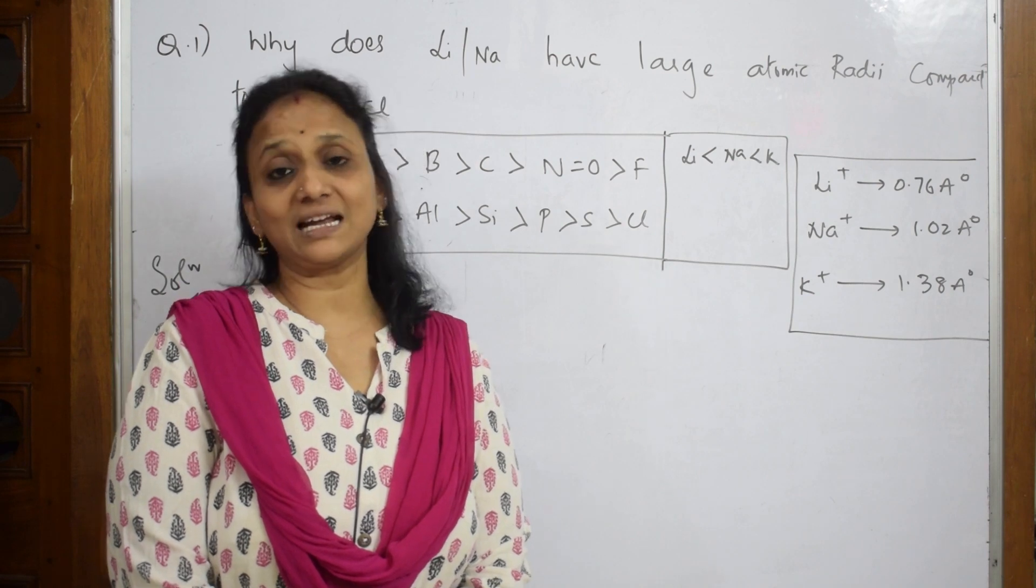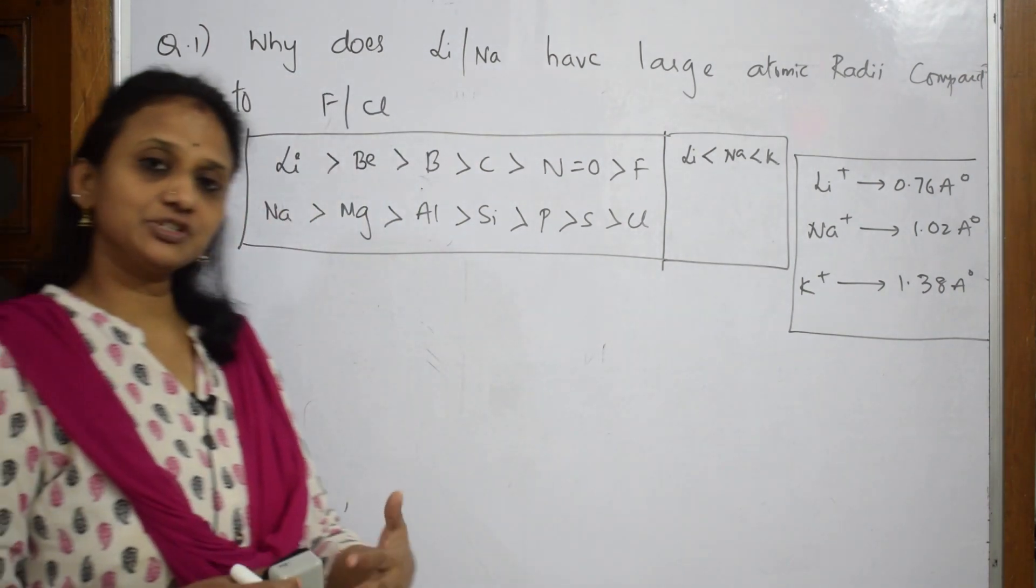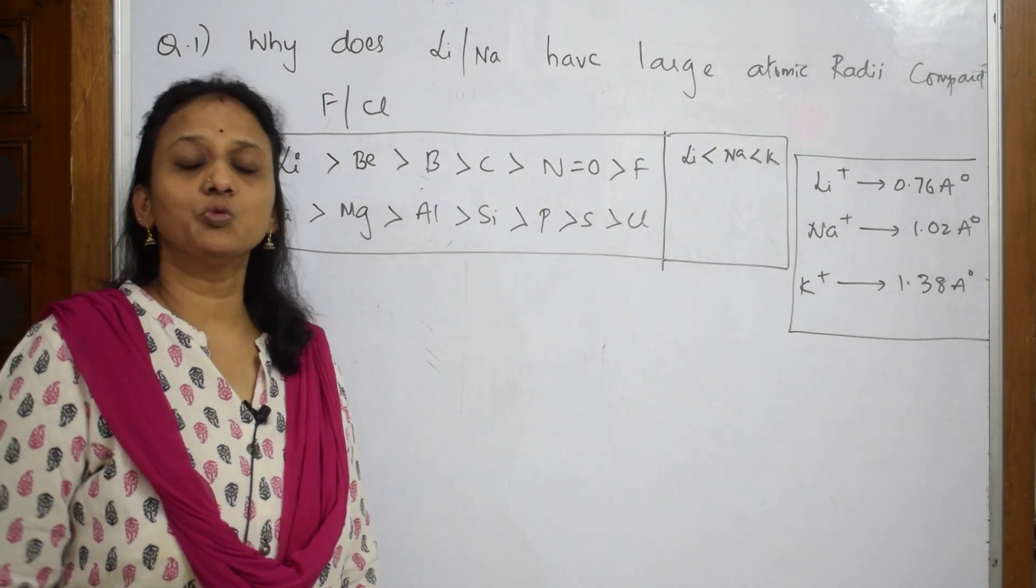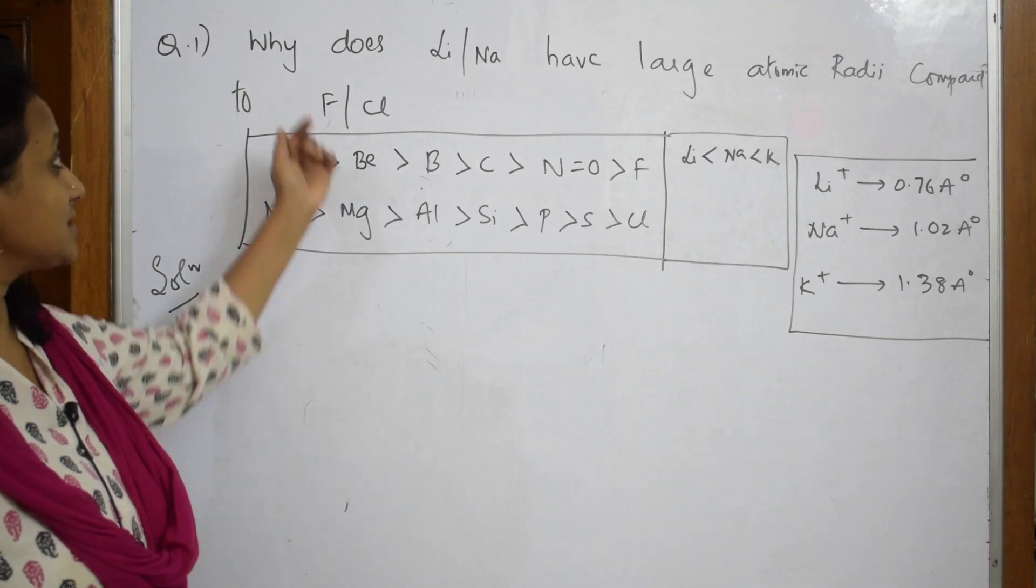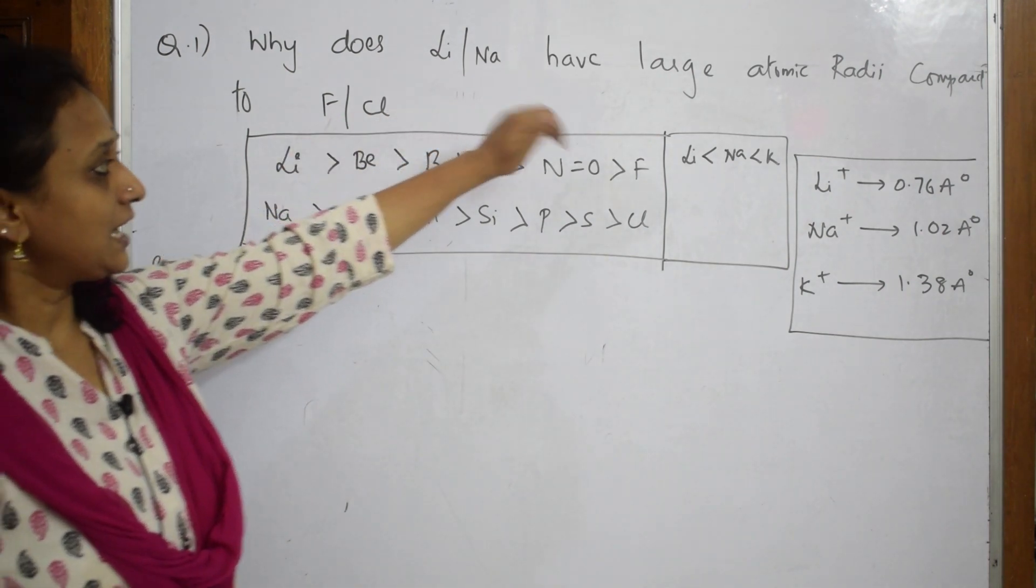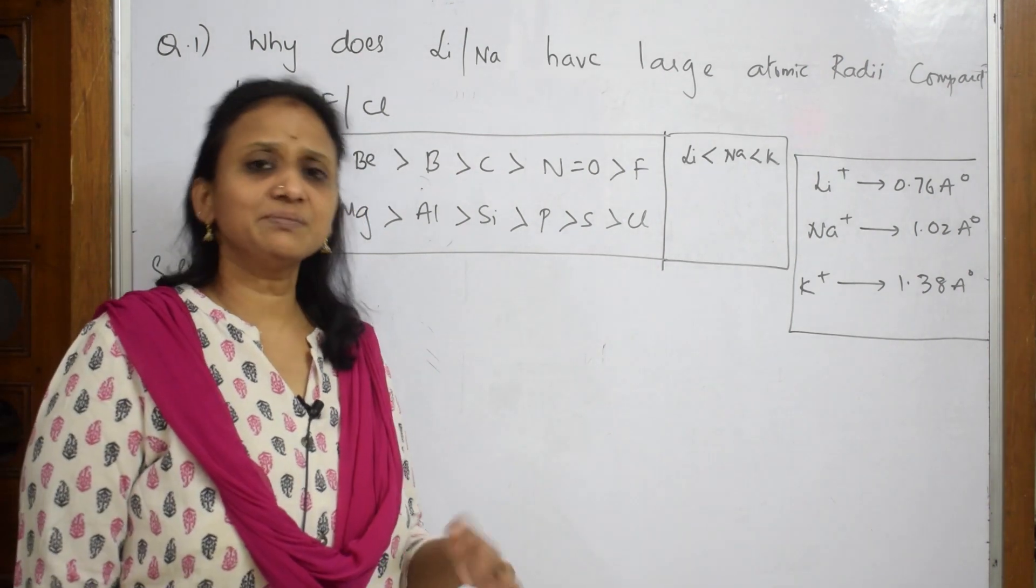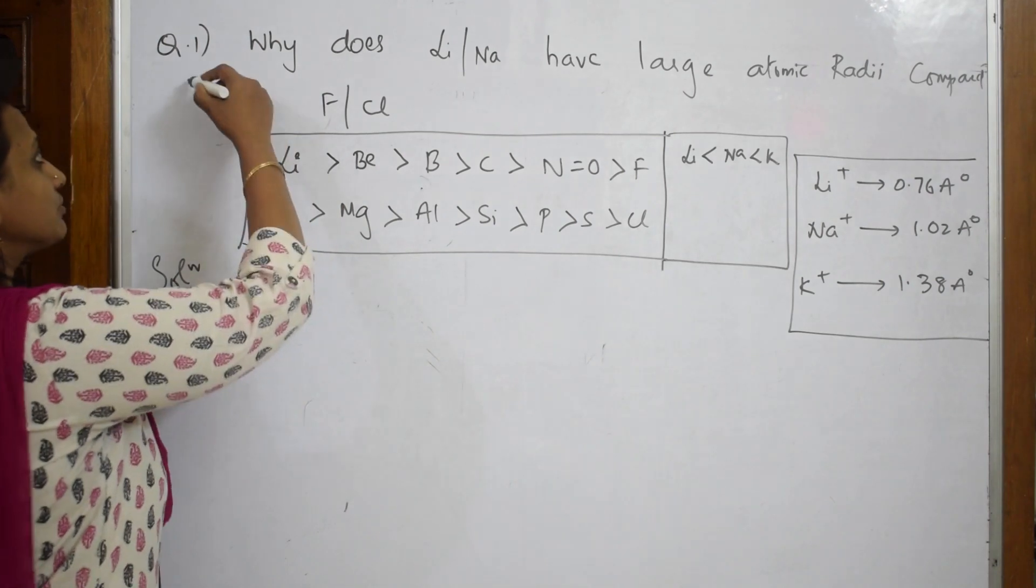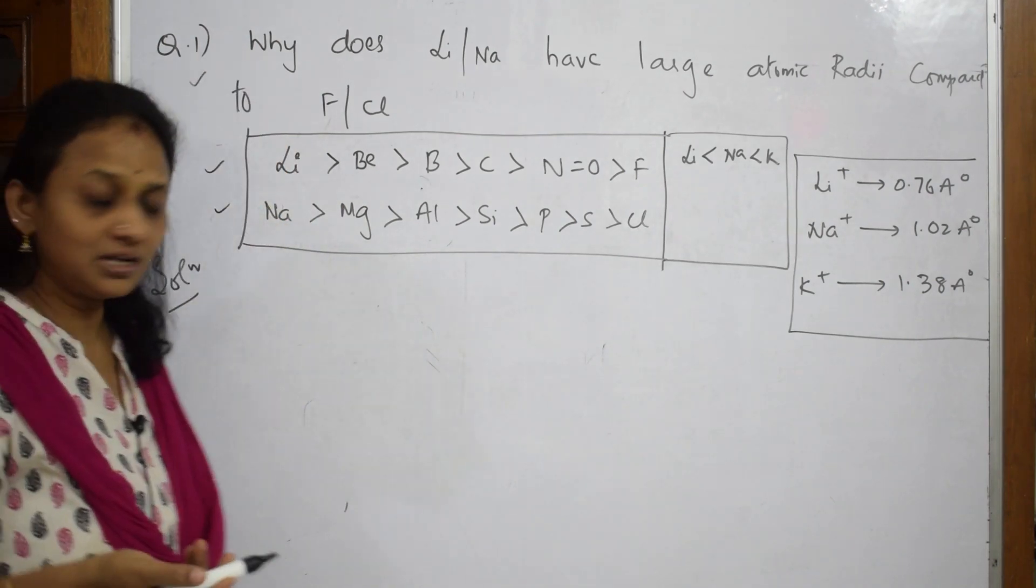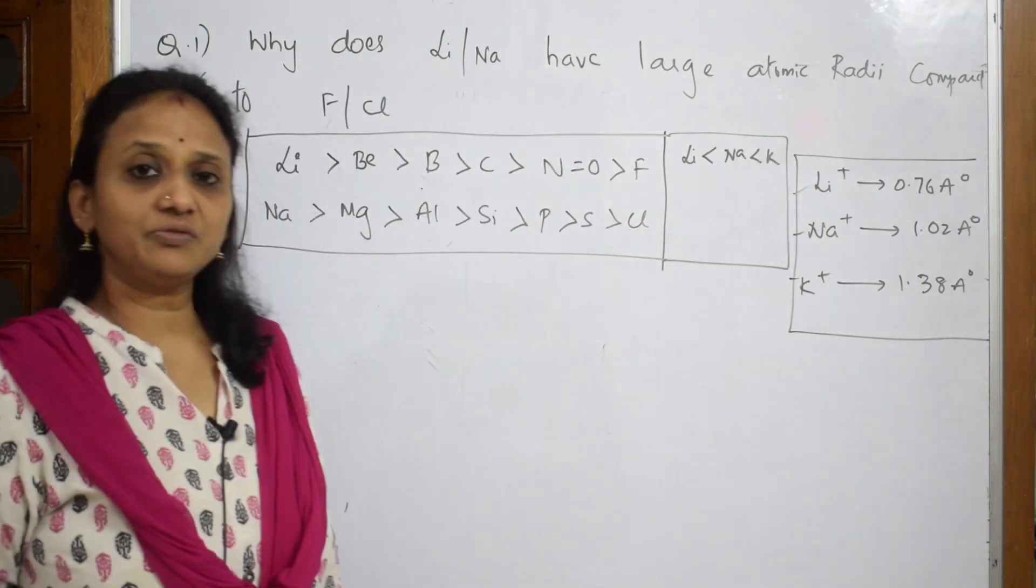Let us start with the first question and see how to write the answer. I'll go from basic questions then pick up more complicated questions. What does this say? Why does lithium or sodium have larger atomic radii compared to fluorine and chlorine? Simple question. When such questions are given, they may give you the question, a trend, or values - it may be any way.